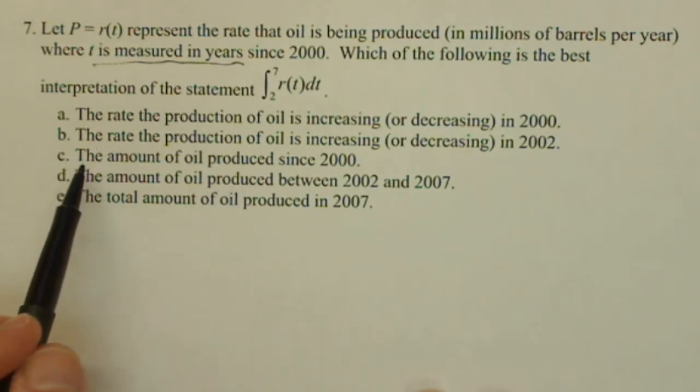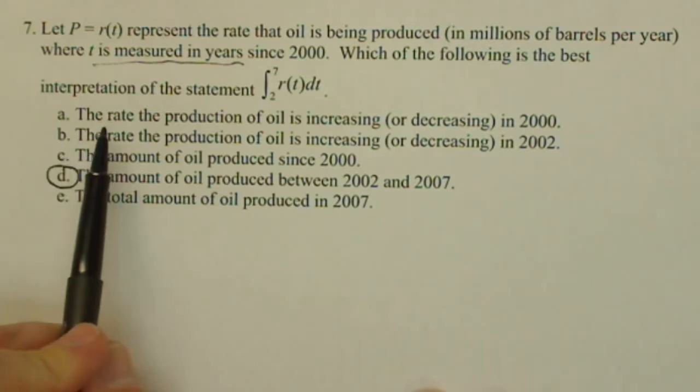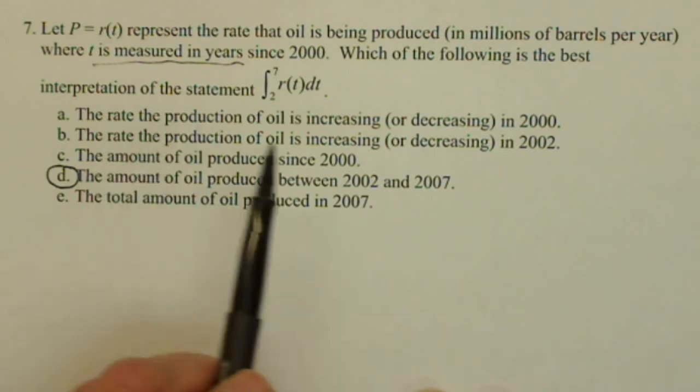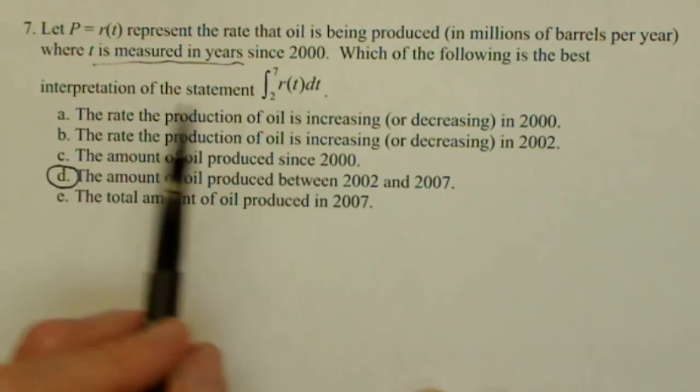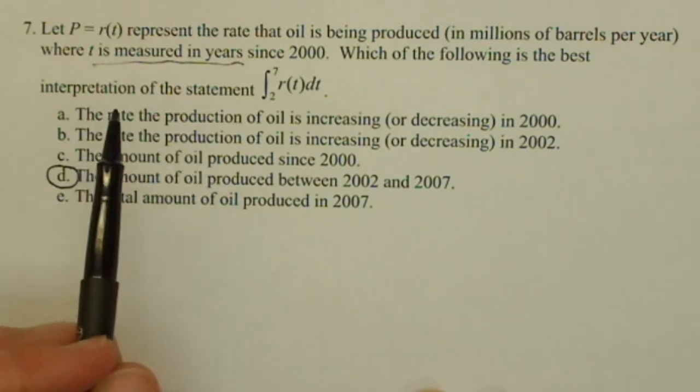The one that is most like that is d. Let's just go through these. Talking about the rate that the production of oil is increasing and decreasing - that's what r of t does. Once we make it an integral, it's no longer a rate, it's an amount.